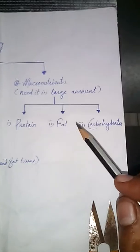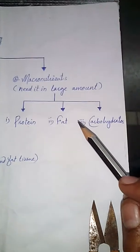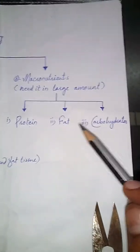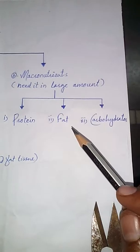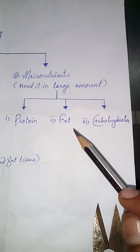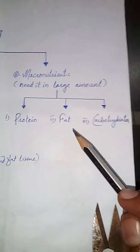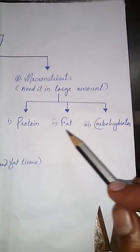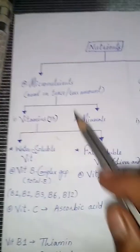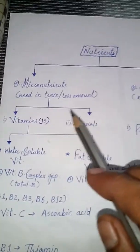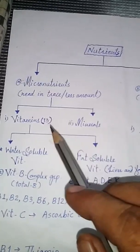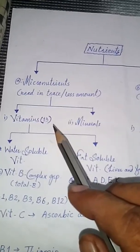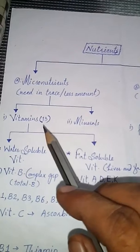Some part of these nutrients is produced in our body, but in a less amount or not in adequate amount, so we need it from our diet. While the micronutrients are also present in the diet — we get them from different foods in our diet.